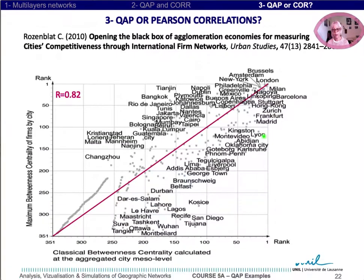The two measures — the maximum betweenness centrality calculated at the micro level and the one classically calculated at the meso level of cities — are correlated at 0.82. But some cities have a relative advantage with the new micro measure.